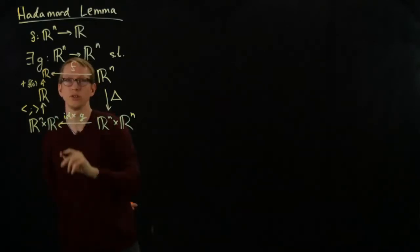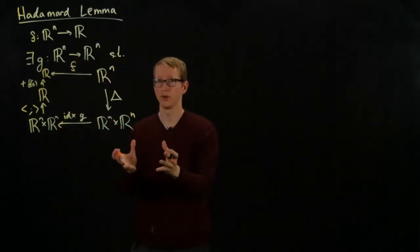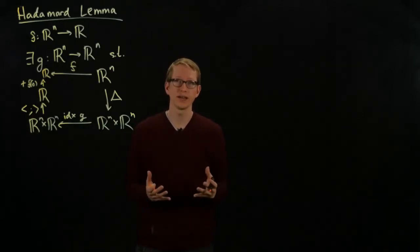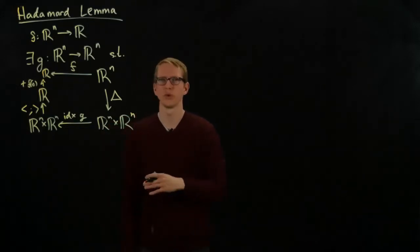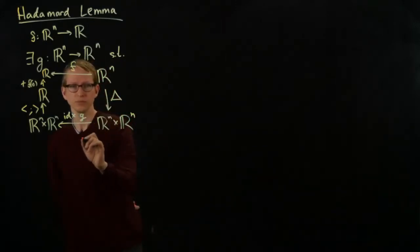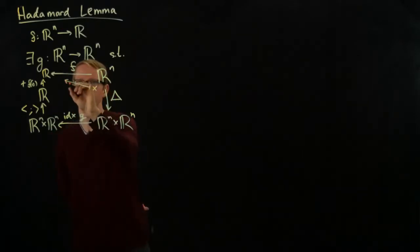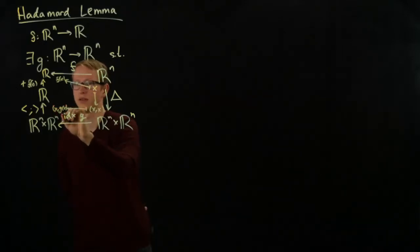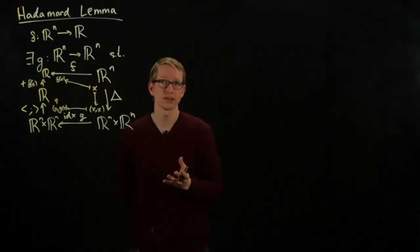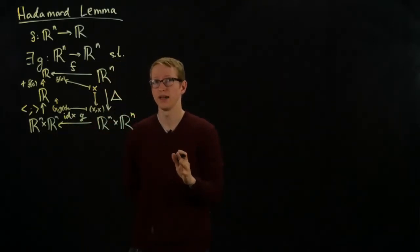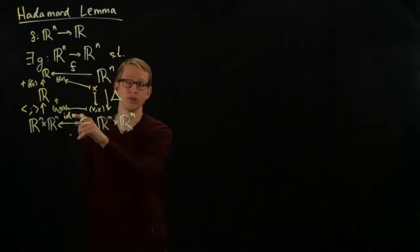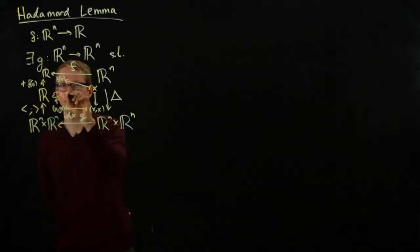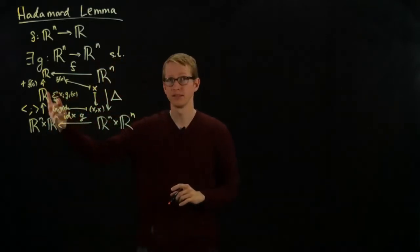And this diagram actually commutes. So what this means is, let's unravel what all of this means. I want you to get used to thinking about diagrams instead of the usual set theoretic notation in terms of where elements go. So let's look at this diagram. It says the element x gets sent to f on top here, but x also gets sent to x comma x, and that gets sent to x comma g of x, and that gets sent to here. The inner product of x with g of x is just the sum of x_i g_i of x, the i-th component g_i of x, so this is sum x_i g_i of x, and this is a sum over i from 1 to n, and then we add this to f of 0.